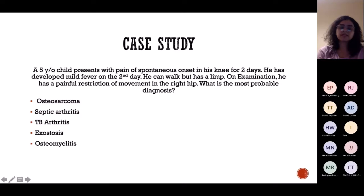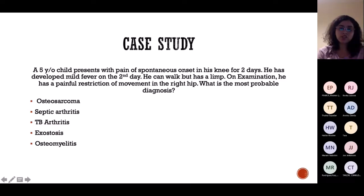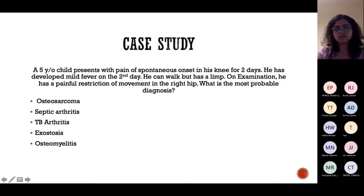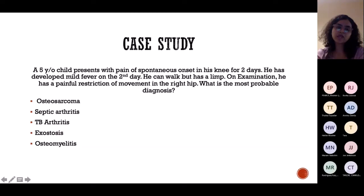The first case study: a five-year-old child presents with pain of spontaneous onset in his knee for two days. He has developed mild fever on the second day. He can walk but has a limp. On examination, he has painful restriction of movements in the hip. What is the most common diagnosis for this patient?